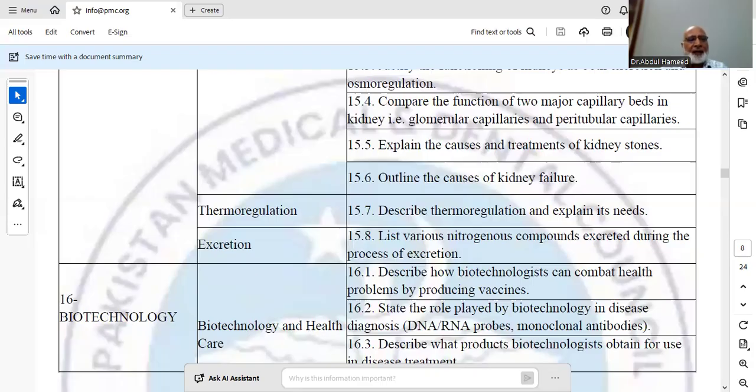Then the step is mass production and distribution. Modern biotechnological techniques allow rapid and large-scale production of vaccines using bioreactors, automation, and cold chain systems for global distribution. All these processes are under the control and supervision of biotechnologists.